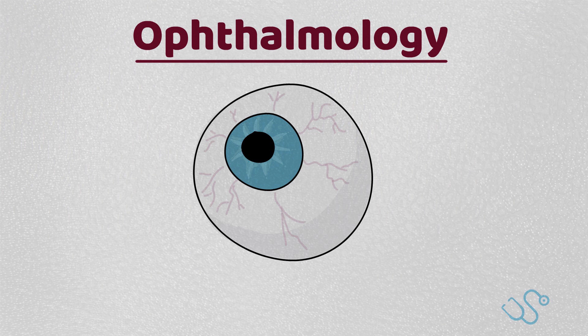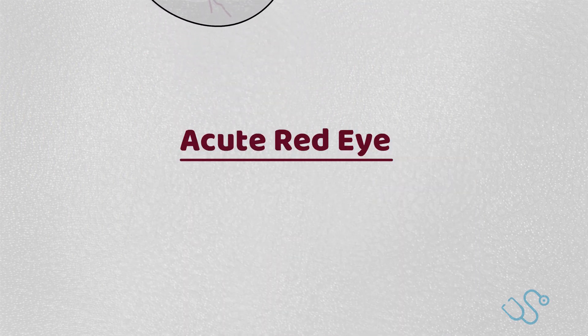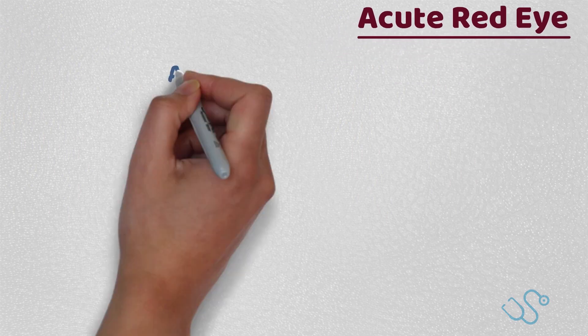Some of the other ocular pathologies like glaucoma, cataract, and diabetic retinopathy will be covered in other videos. So let's start with the acute red eye. This is an important pathology not to miss, simply because of some of the more urgent differentials. In primary care, it's worth being comfortable with knowing which cases need to be seen as an emergency by the eye clinic versus ones we can deal with in primary care. So let's run through some of the differentials.